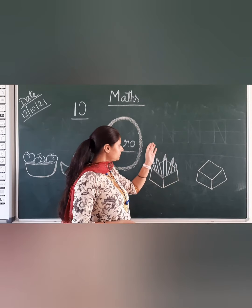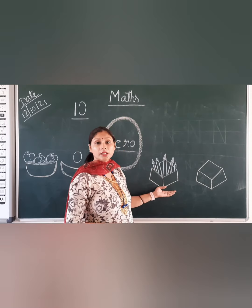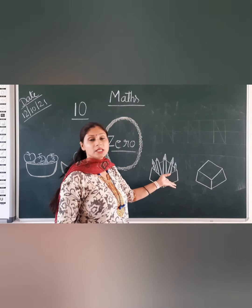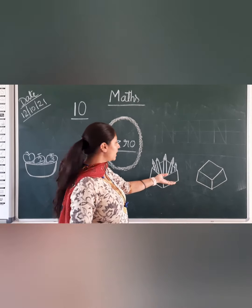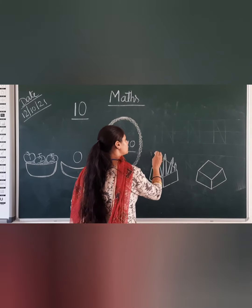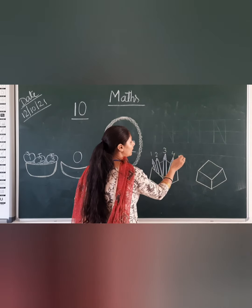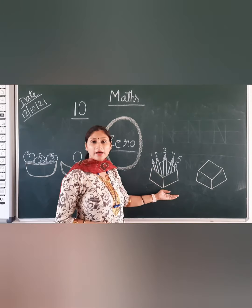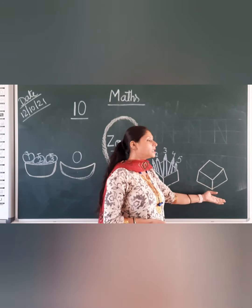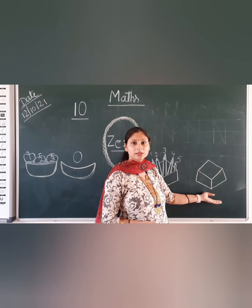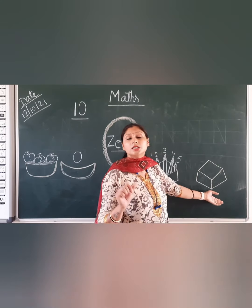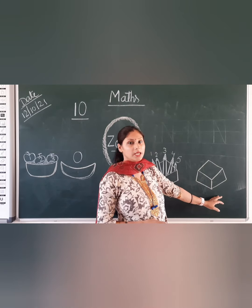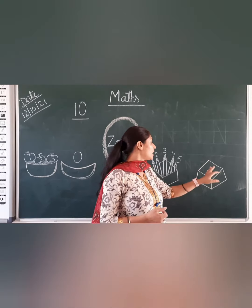Now look at this example. Yaha par do box hai — one and two. This box has pencils. How many pencils? We need to count now — one, two, three, four and five. So this box has five pencils. Now look at this — dekhi, yaha par koi bhi pencil hai kya? No. So this box has zero pencils. Yaha par koi bhi pencil nahi hai, yaha kya bol sakte hai? Ki this box has zero pencils. Ek bhi pencil nahi hai.